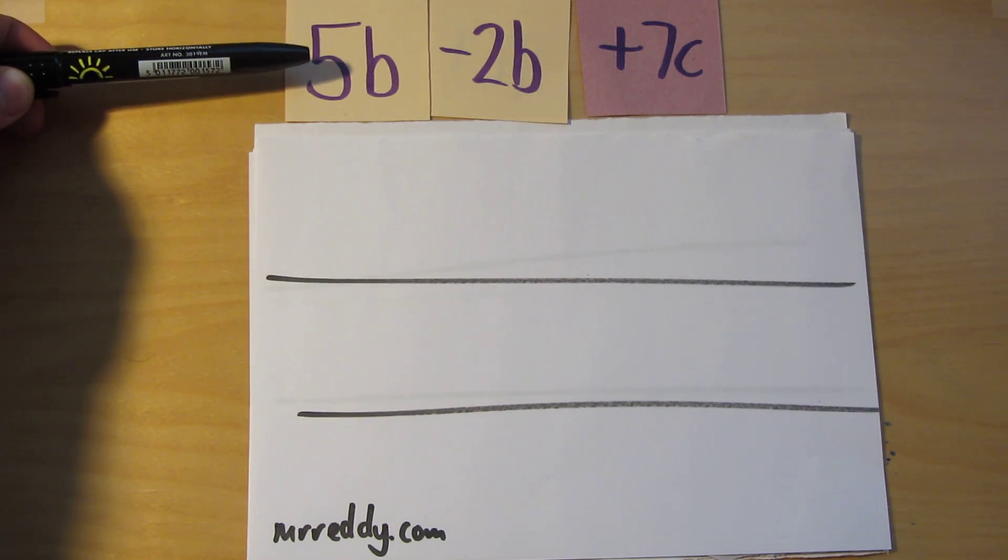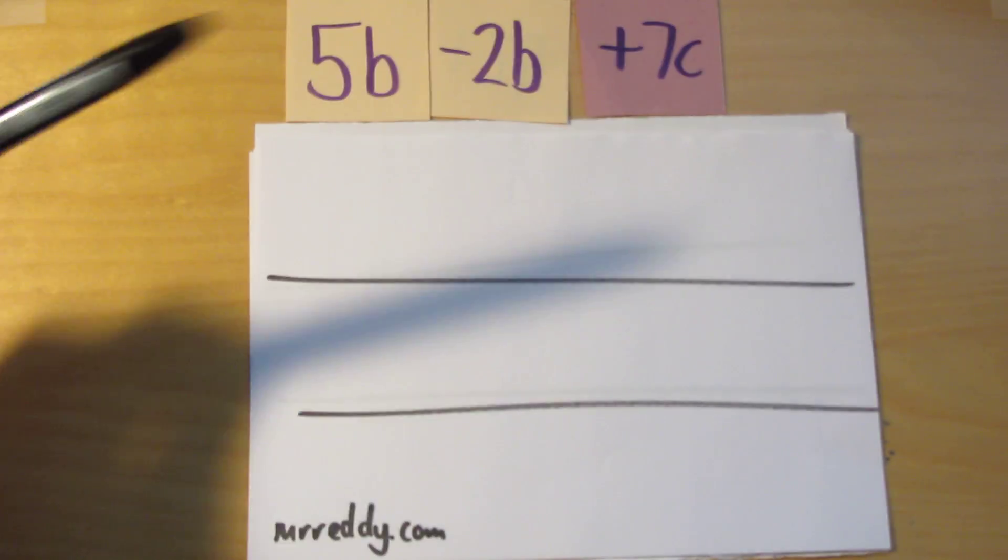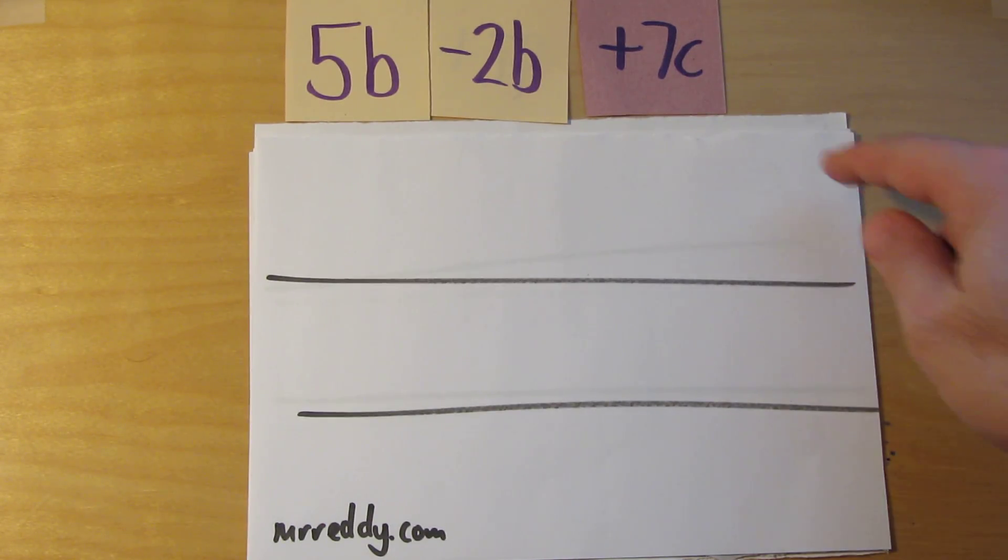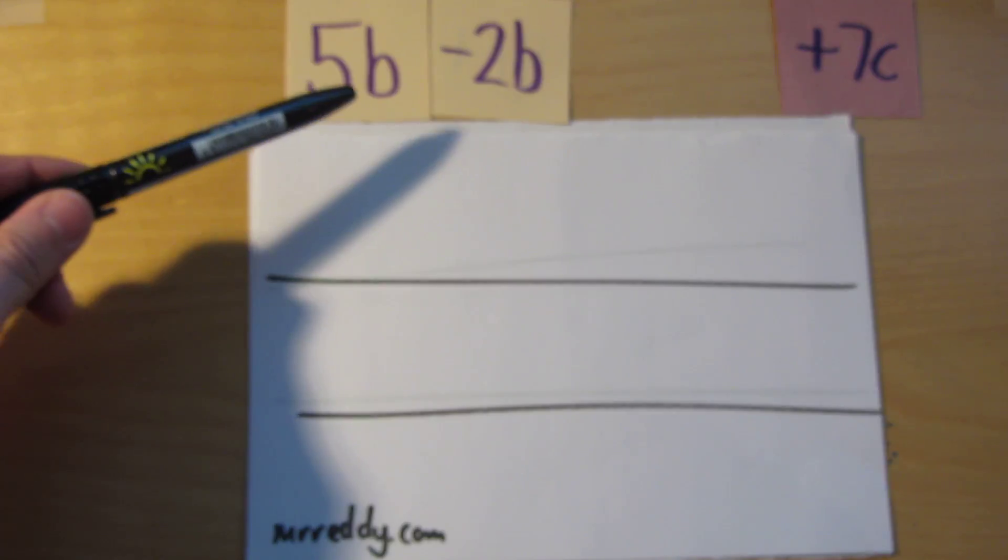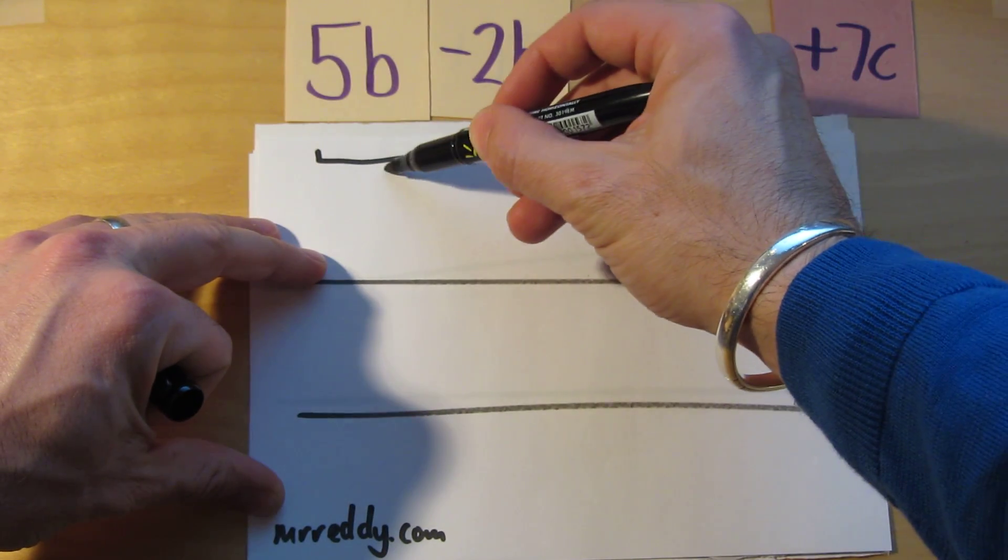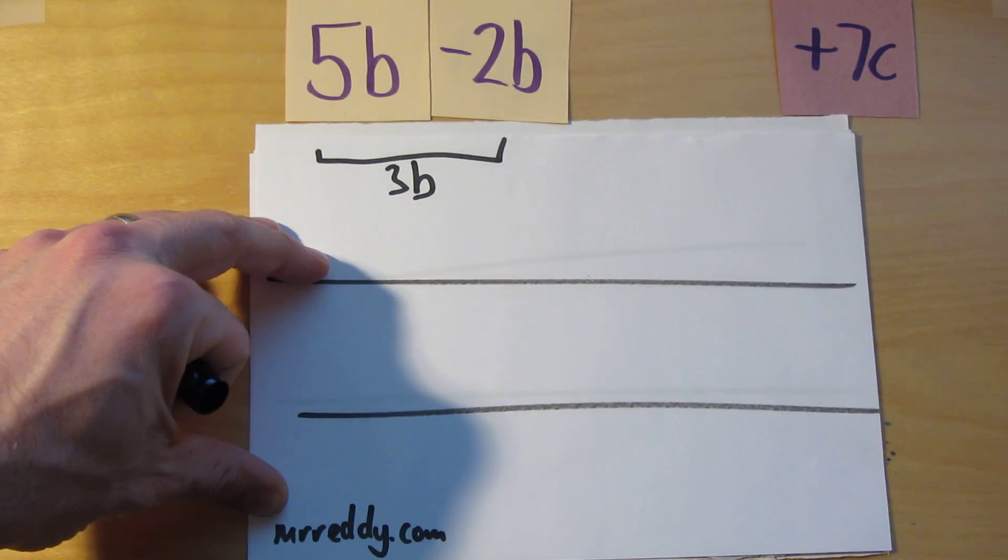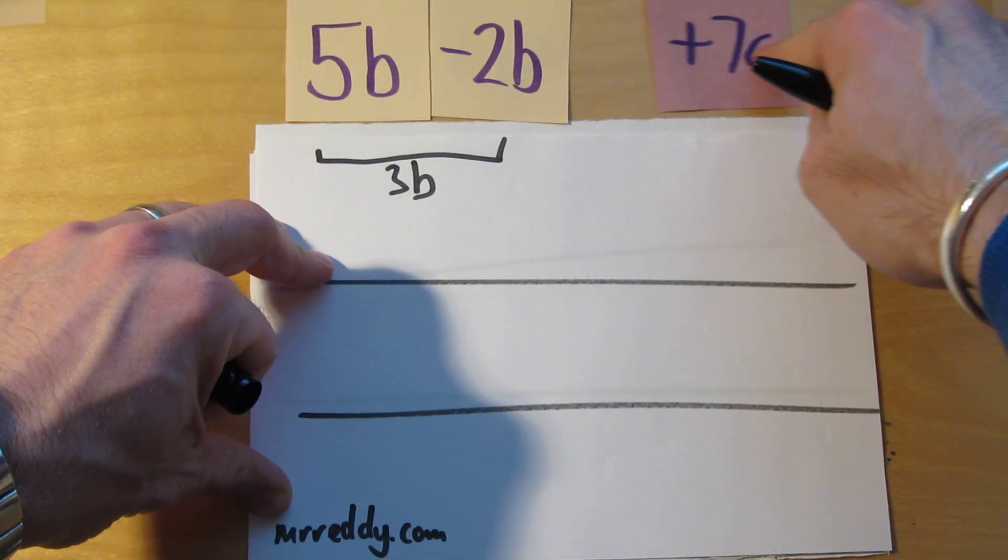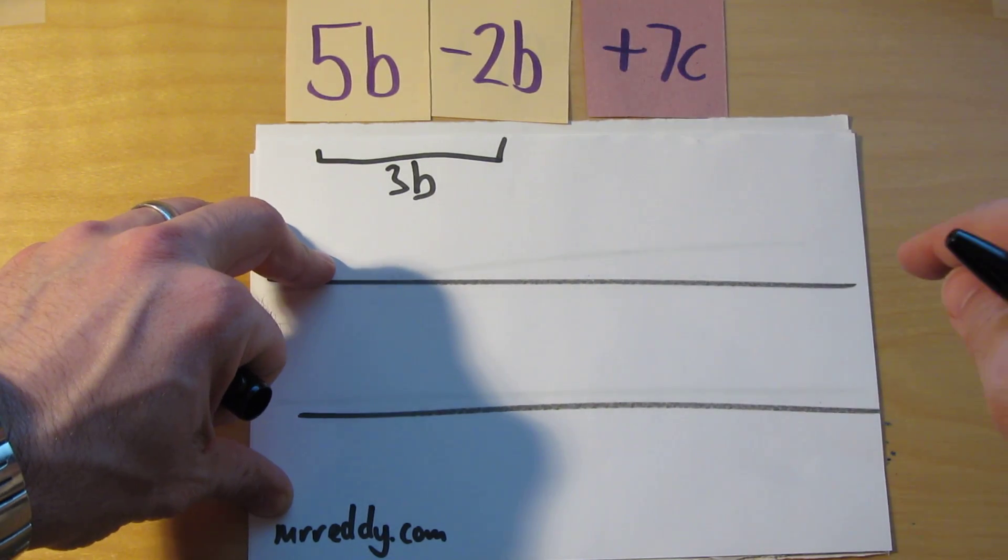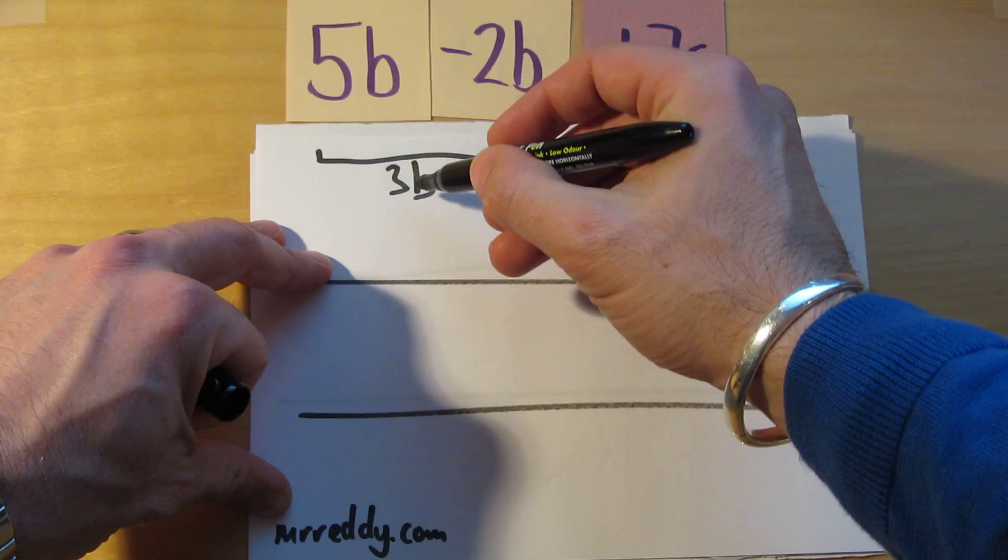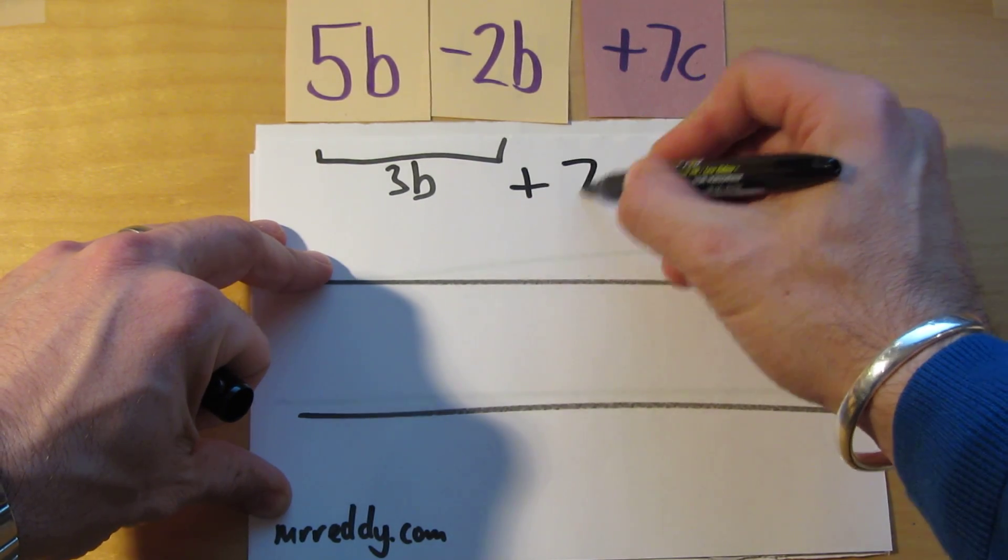Here's our first one, 5b take away 2b plus 7c. If you watched the previous video you would know that 5b take away 2b simplifies to 3b. The only difference with that expression is that we're now adding the 7c on as well to create this expression and that gives you 3b plus 7c.